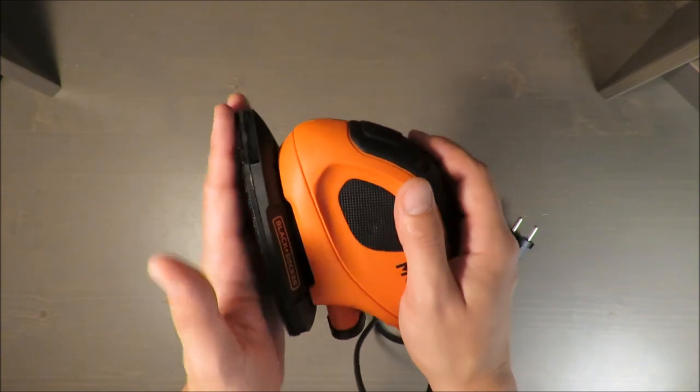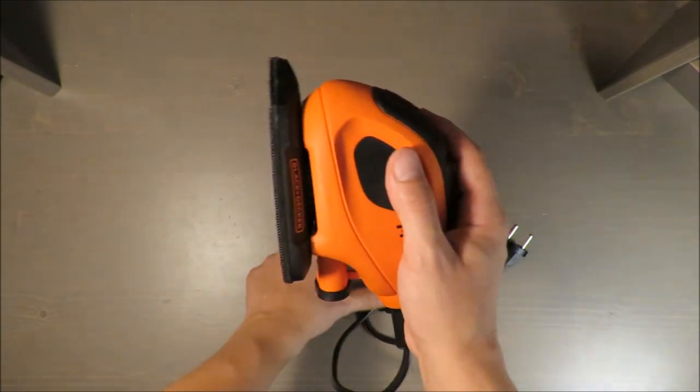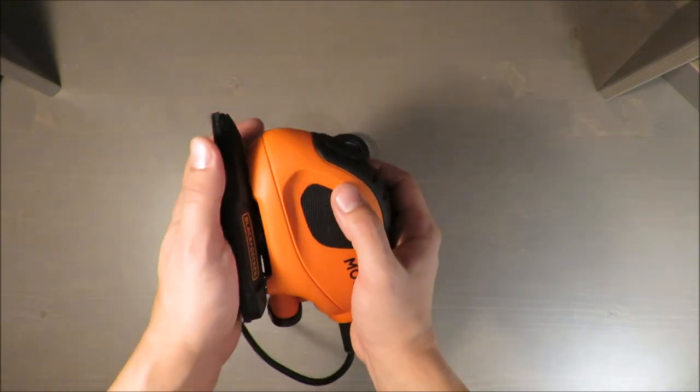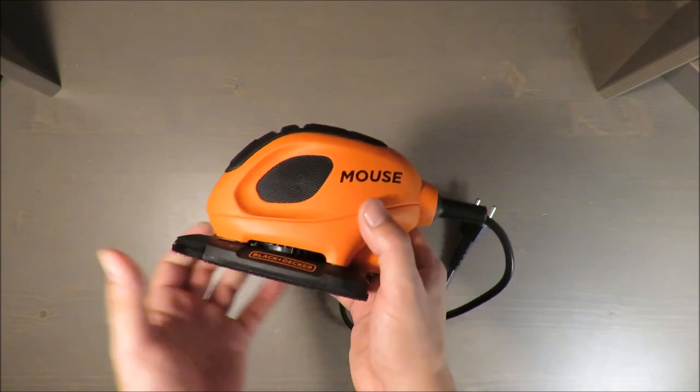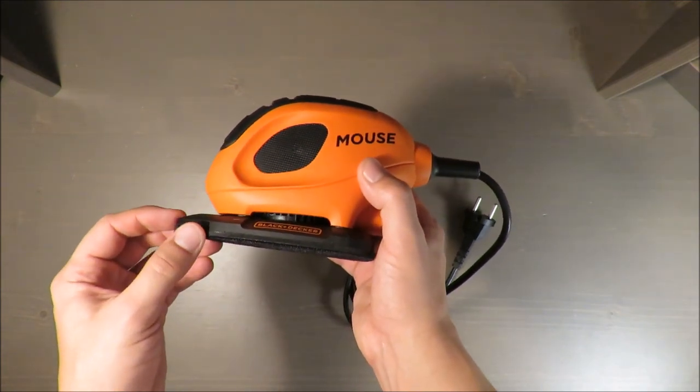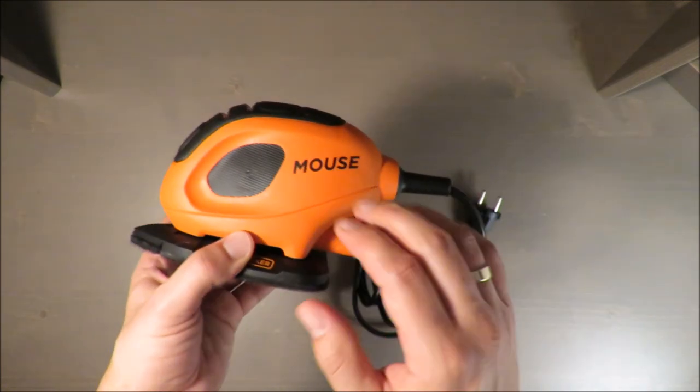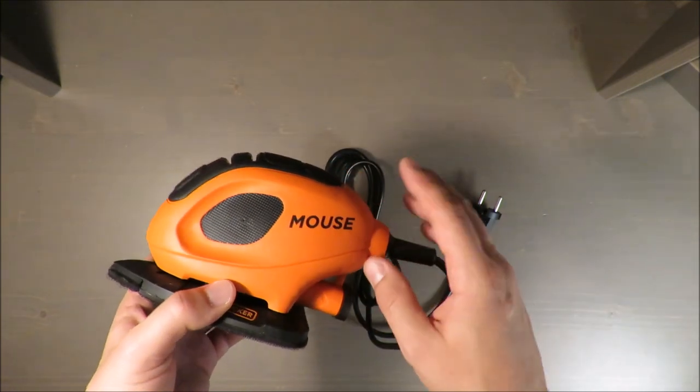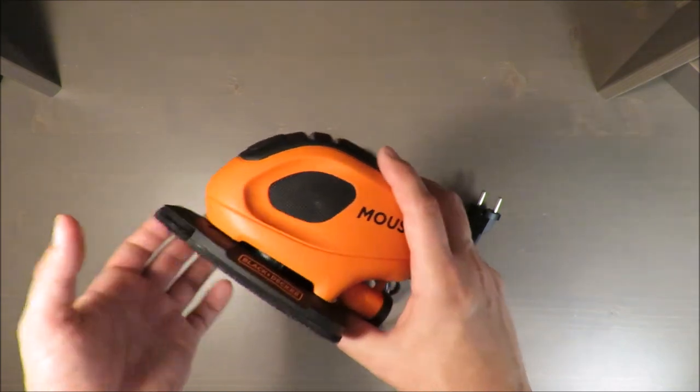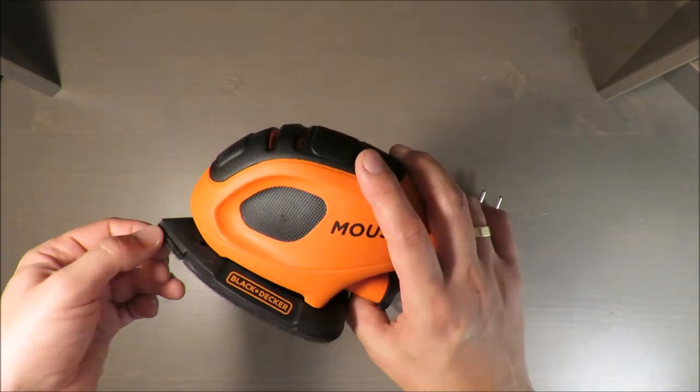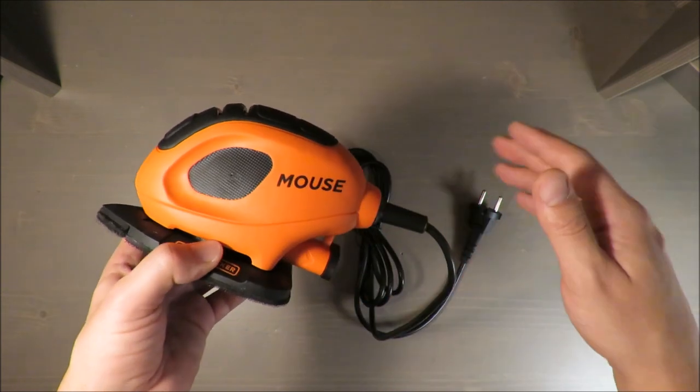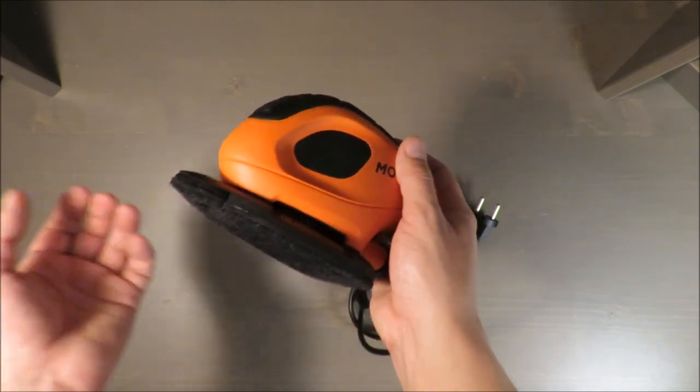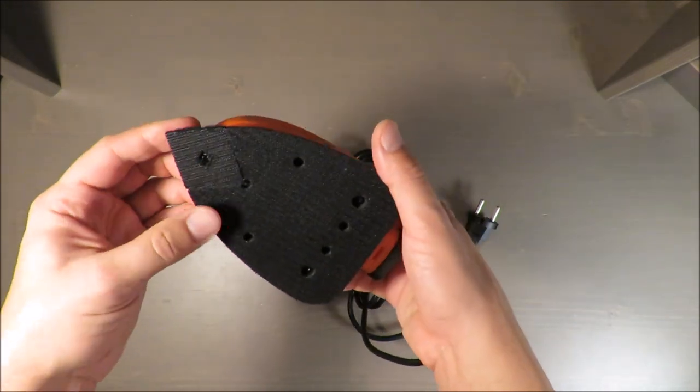It's also included in the set, the sanding paper which has two endings that you can replace, because most of the time when you are sanding, the top is working the hardest with such a mouse grinder or sander.